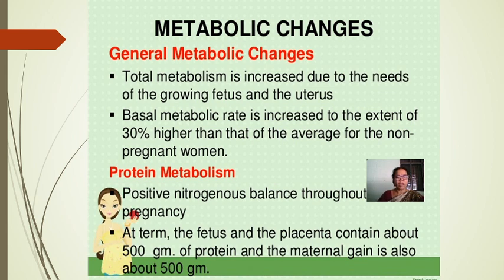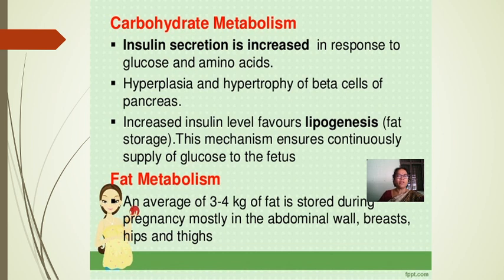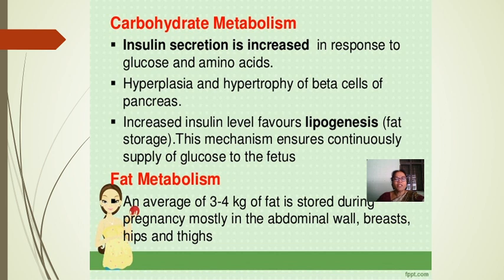Carbohydrate metabolism: insulin secretion increases in response to glucose and amino acids. Hyperplasia and hypertrophy of the beta cells of the pancreas occur, and the increased insulin level favors lipogenesis. This mechanism ensures a continuous supply of glucose to the fetus, which is also why weight gain is seen in mothers.